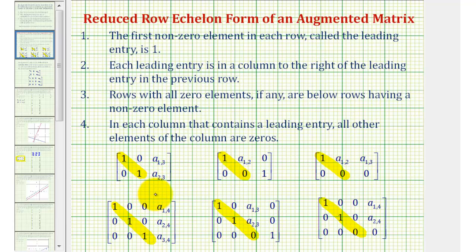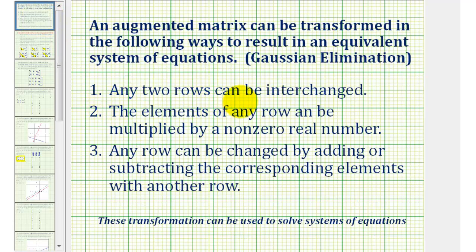The way we transform the matrix is by a process called Gaussian elimination, which means any two rows can be interchanged. The elements of any row can be multiplied by a non-zero real number. And number three, any row can be changed by adding or subtracting the corresponding elements with another row.